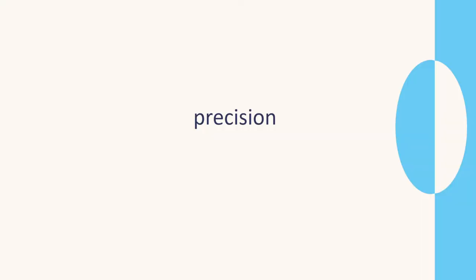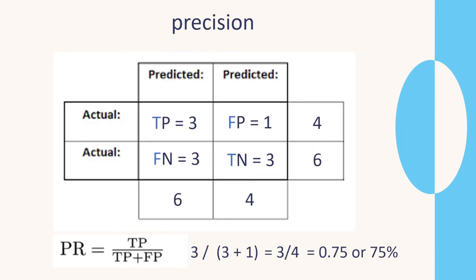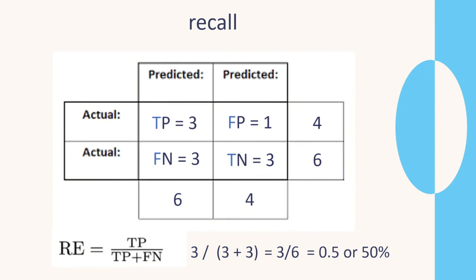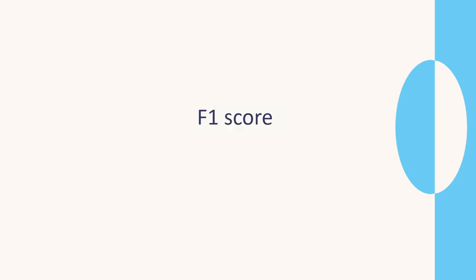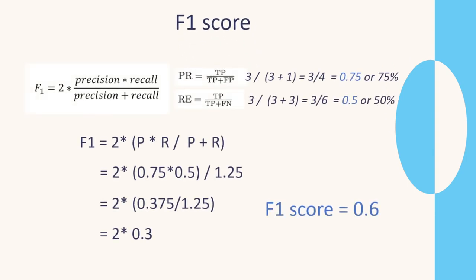Let's look at the evaluation metrics for our ball game. We got 75% precision — three correct from four. Recall was three out of six, so 50%. Accuracy was six correct out of ten, so 60%. And calculating the F1 score from precision and recall gives us 0.6.